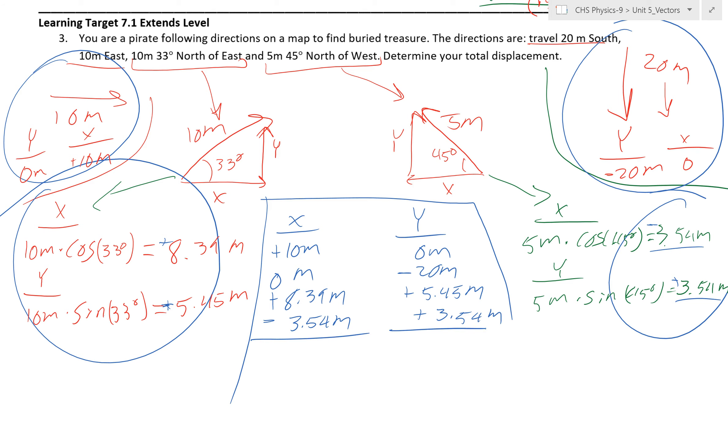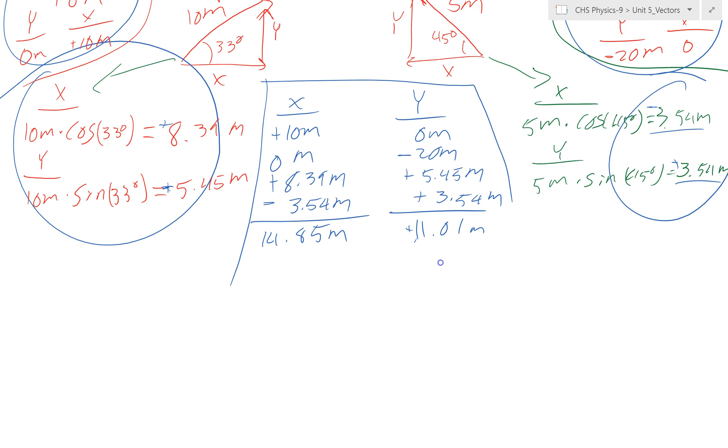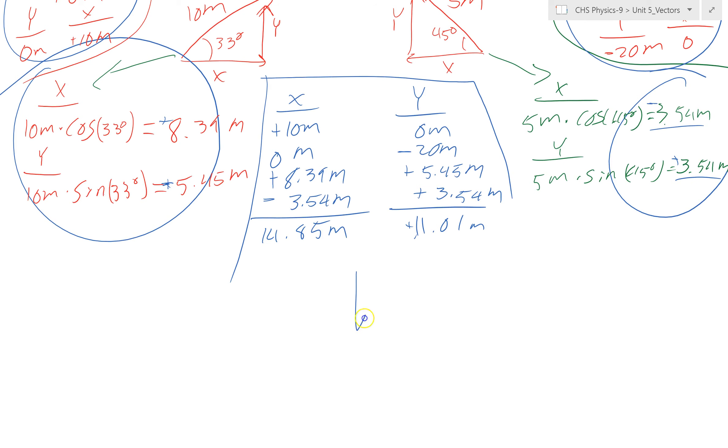Add each of those up, and we end up with, in the x direction, 14.85 meters, and in the y direction, 11.01 meters. Of course, you add those up, and then we now have a triangle that's pointing down 11.01 and then to the right 14.85 meters. And so we want to find the final resultant. So we do a squared plus b squared equals c squared. And we end up with 11.01 squared plus 14.85 squared. Take the square root of that, and our final answer would be 18.5 meters.